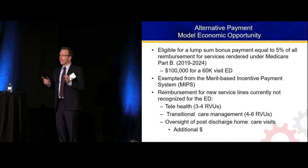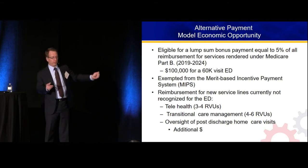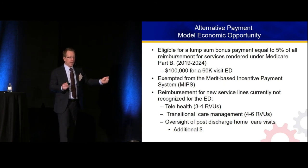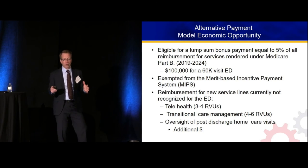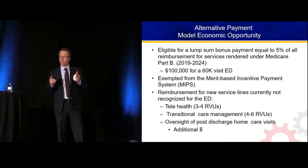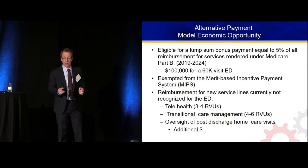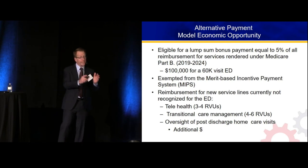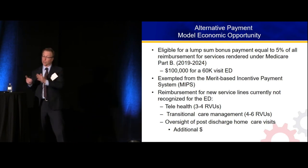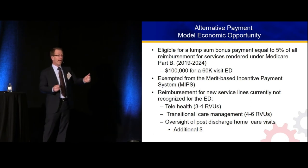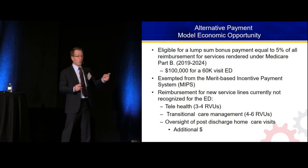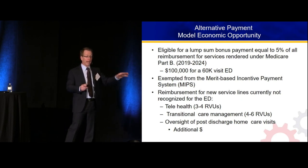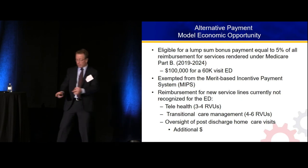We need to reach backwards in the acuity spectrum. I'm an acute unscheduled care expert and a logistics expert. We need to measure quality, benchmark it, look at utilization and outcomes. Why can't I take care of that otitis media, that pharyngitis, that URI in the urgent care and own that space? I took care of them in my fast track.